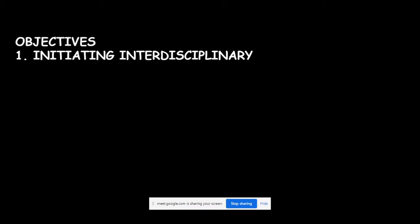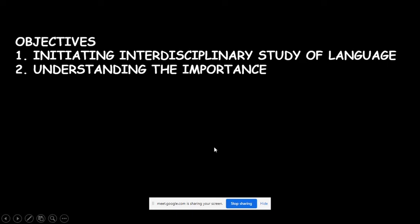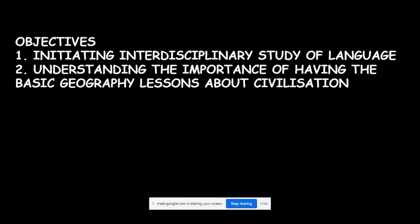The first objective is initiating interdisciplinary study of language. English is a discipline, social science is a discipline, home science, maths, science, Hindi — all these are disciplines. Whenever we are doing an interdisciplinary study, that means using one discipline to study another discipline. So we can use other subjects to initiate our skills of the English language.